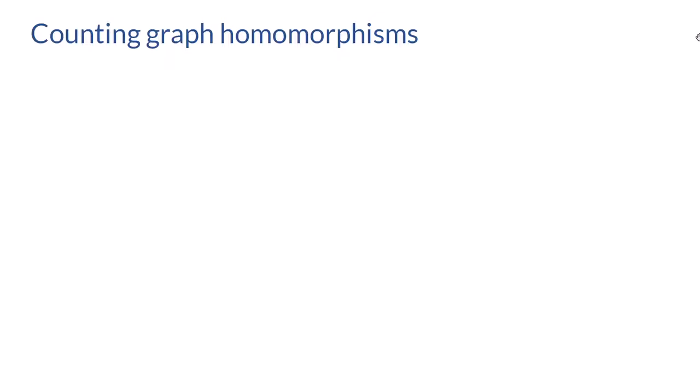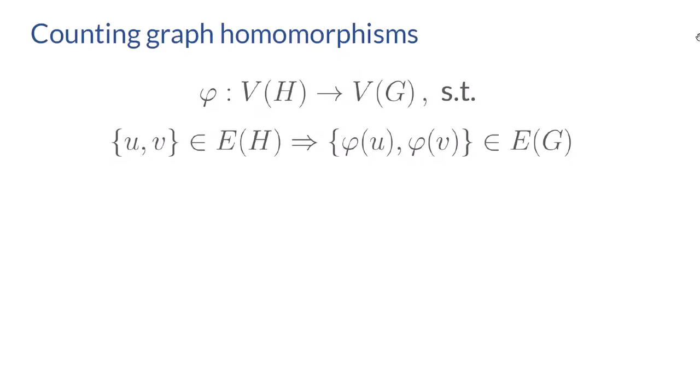The most important problem in this context is the problem of counting graph homomorphisms. A graph homomorphism from a graph H to a graph G is a mapping from the vertices of H to the vertices of G that is edge preserving. That is, whenever there is an edge UV in H, then the image of this edge needs to be an edge in G.